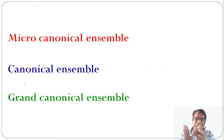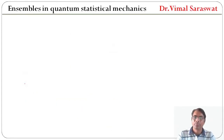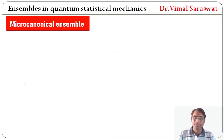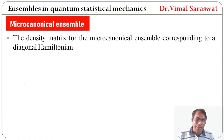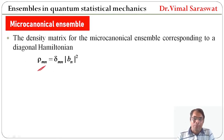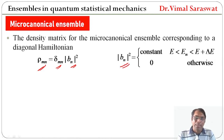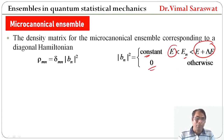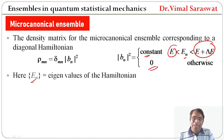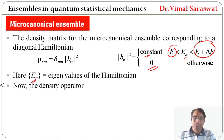In quantum statistical mechanics, we are discussing three types of ensembles. The first one is the micro-canonical ensemble. The density matrix for the micro-canonical ensemble corresponding to a diagonal Hamiltonian is given by rho_mn equal to delta_mn times |b_n|^2. The magnitude |b_n|^2 is constant if the value of E_n lies between E and E plus delta E, and outside this limit its value will be zero. Here E_n is the eigenvalue of the Hamiltonian.